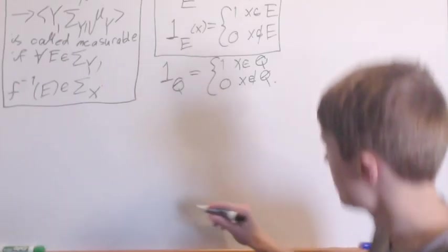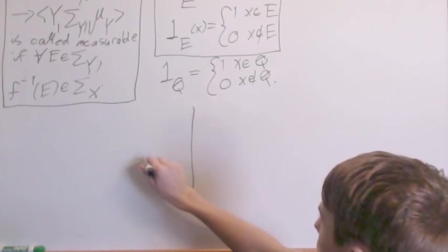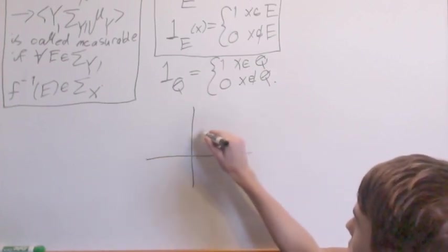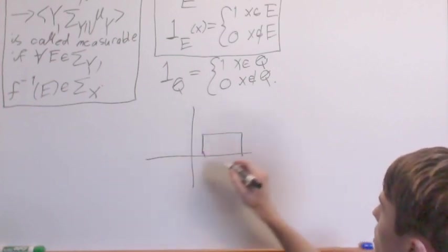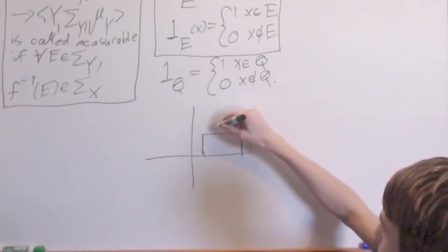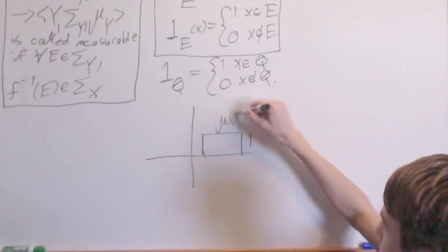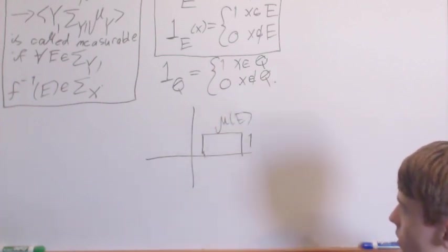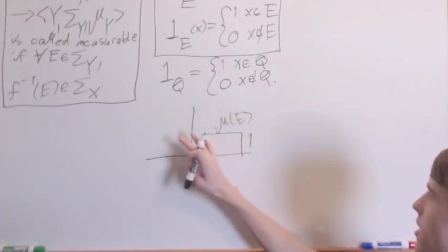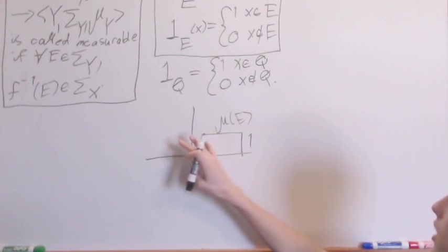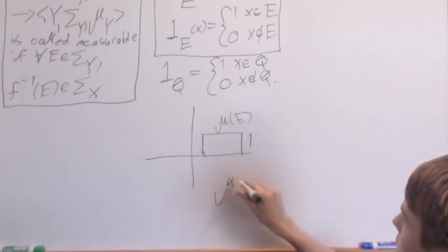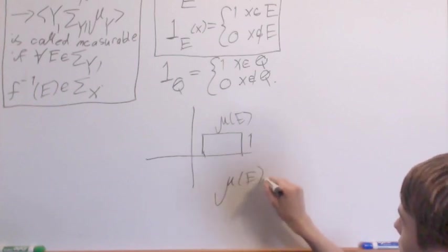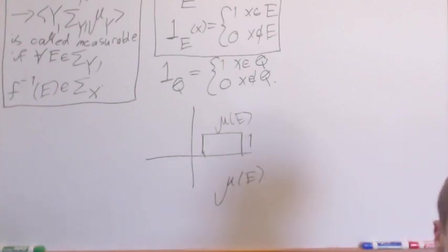And so, what the intuition here is that we have our function that just indicates like that. And it creates a little one by the measure of your set rectangle. So the measure of the set is this length, and it's by one. And so, you get the area is just the measure of the set. And that's the intuition when we move to measure spaces. So, keep that in mind.